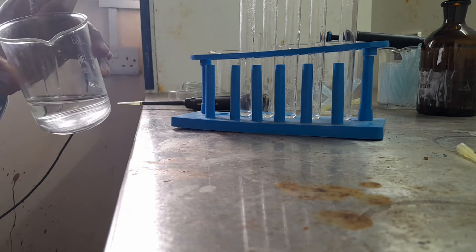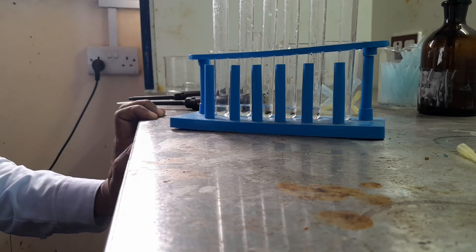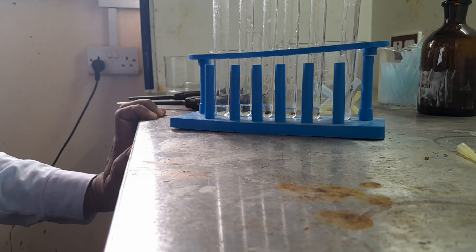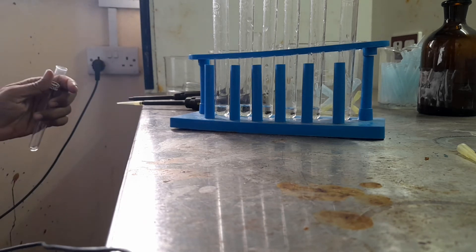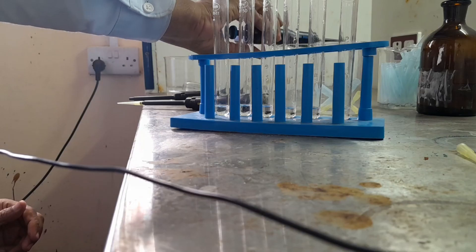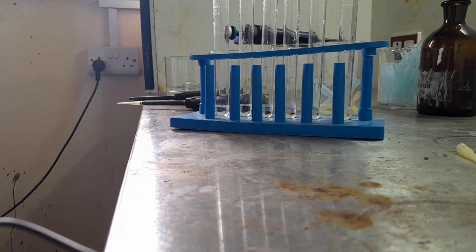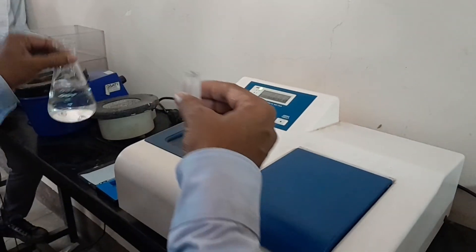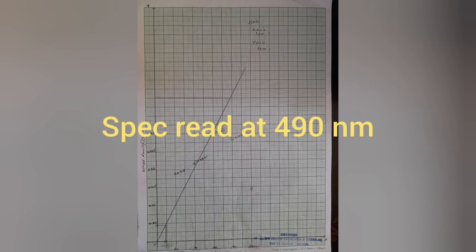This is the blank. Then we need to add 1 ml of sulphuric acid to all the tubes. All the steps have been covered. Keep the tubes for incubation at 37 degrees Celsius for 10 minutes. With distilled water, set the blank to zero.